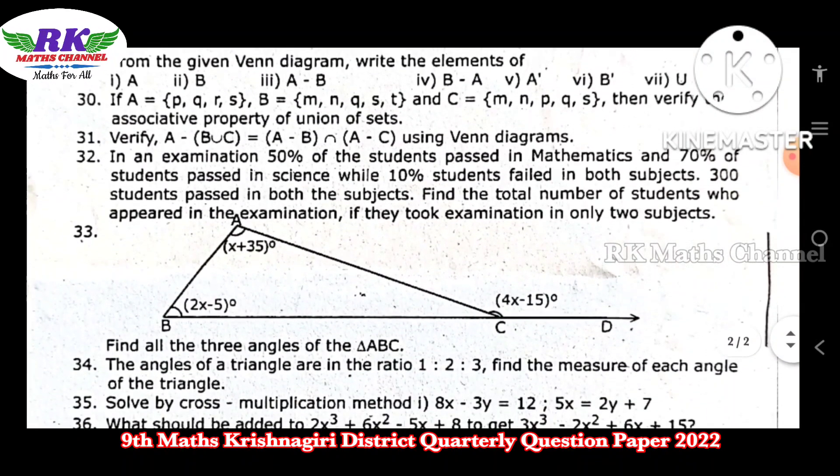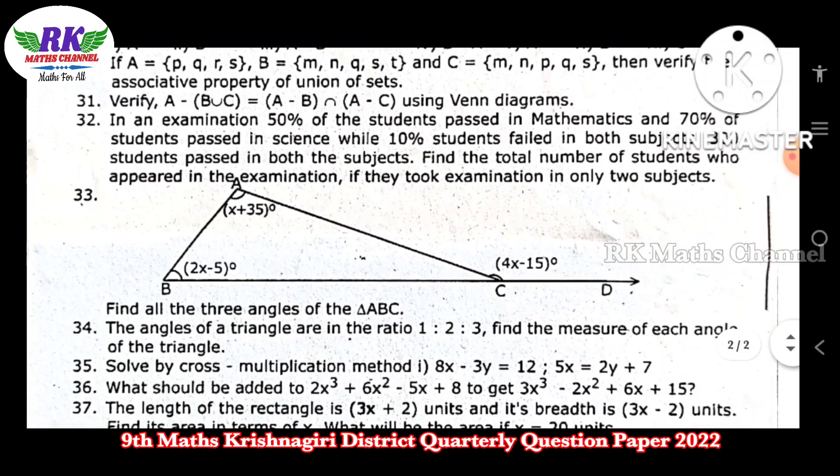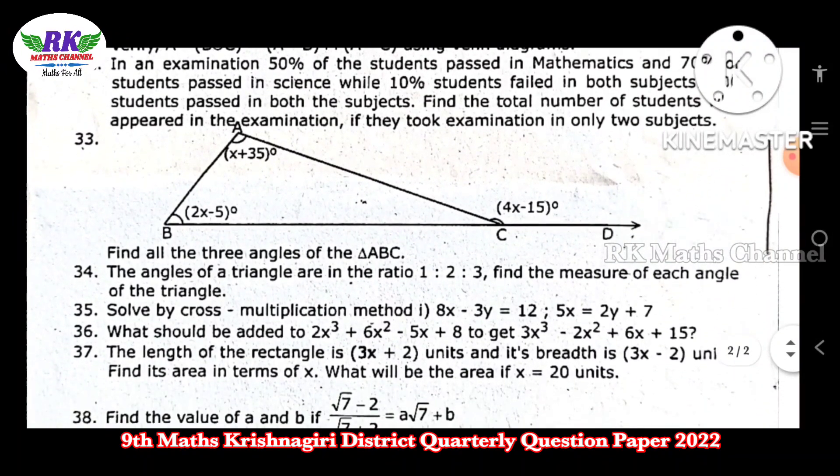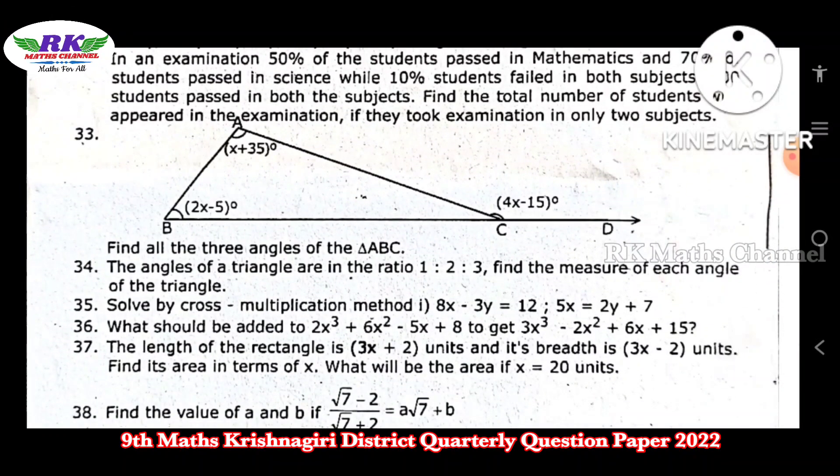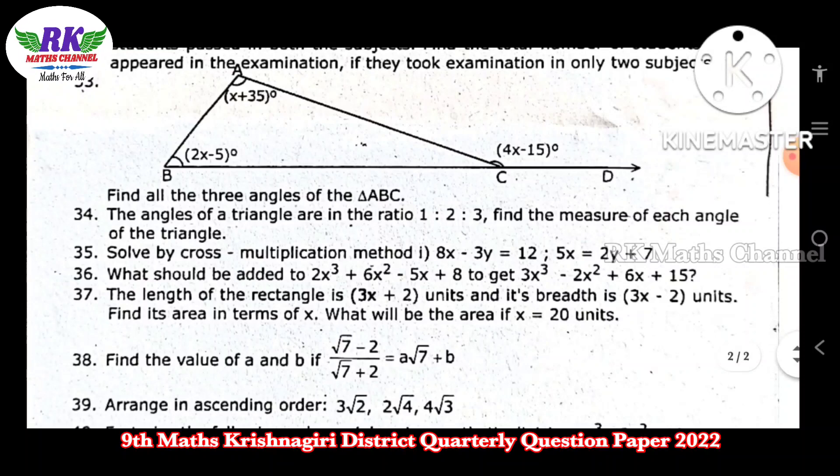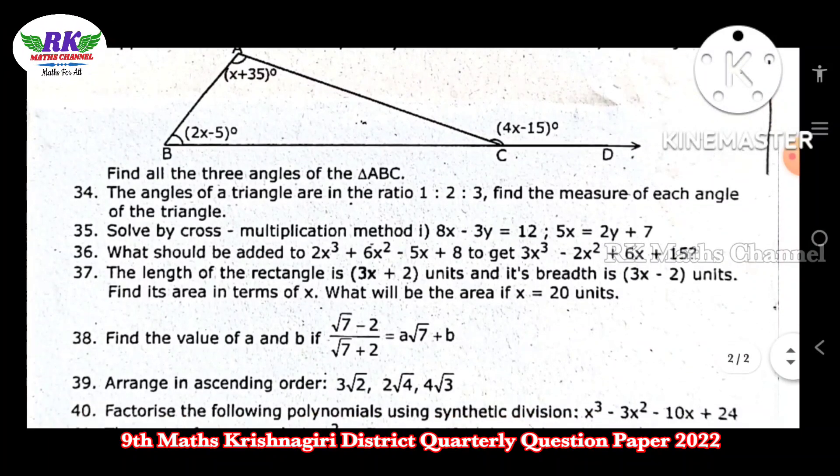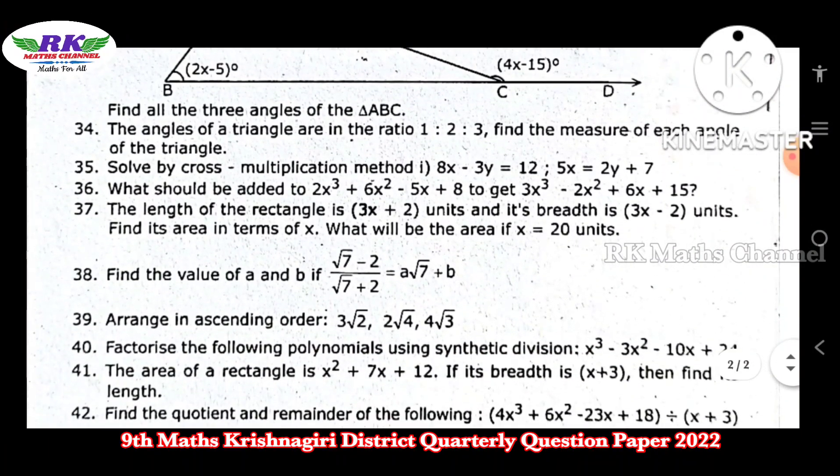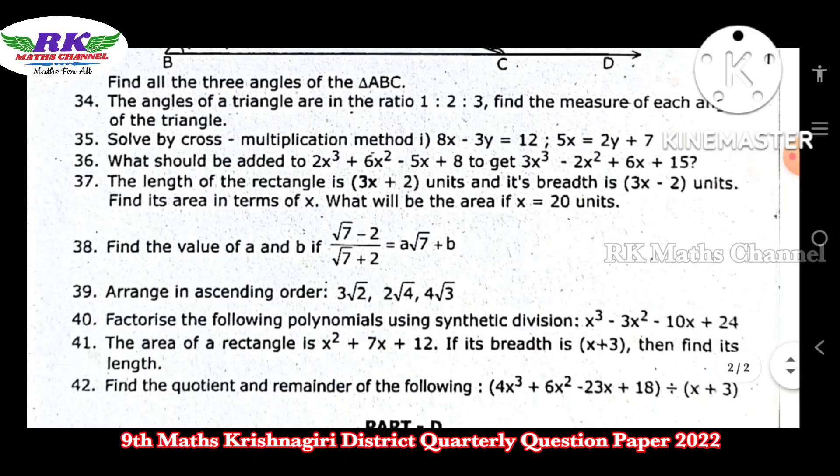There are coordinate geometry and sets questions. The fifth problem involves triangle ABC. Question number 34 uses cross multiplication method. Questions 36 and 37 are also included.